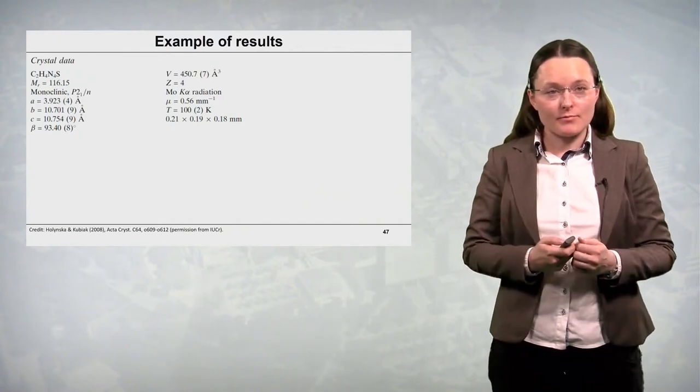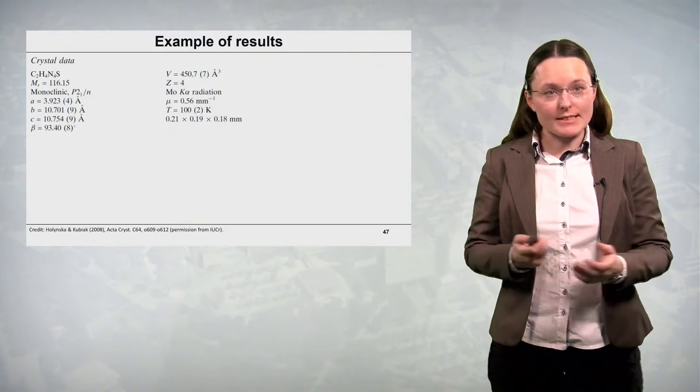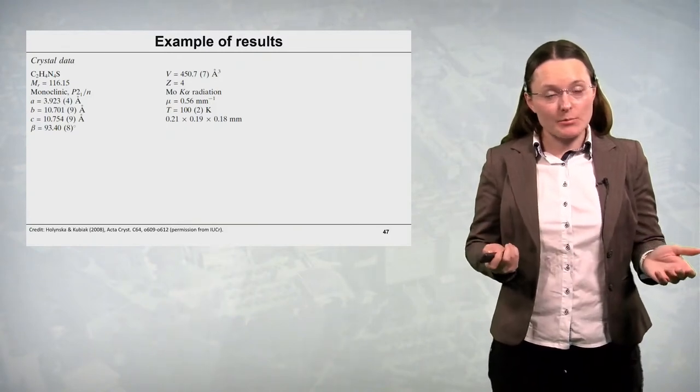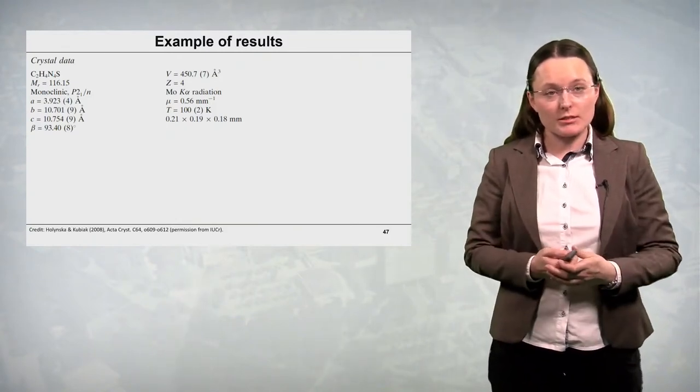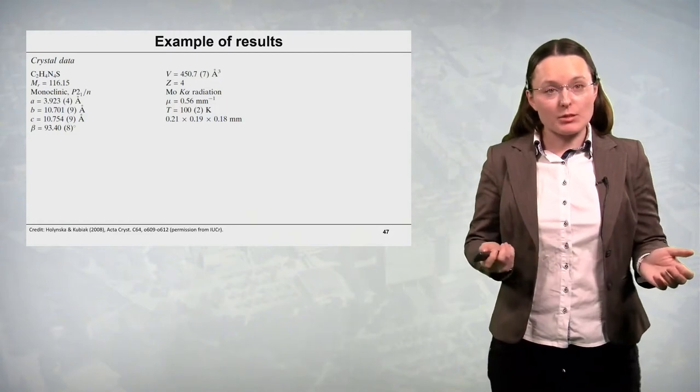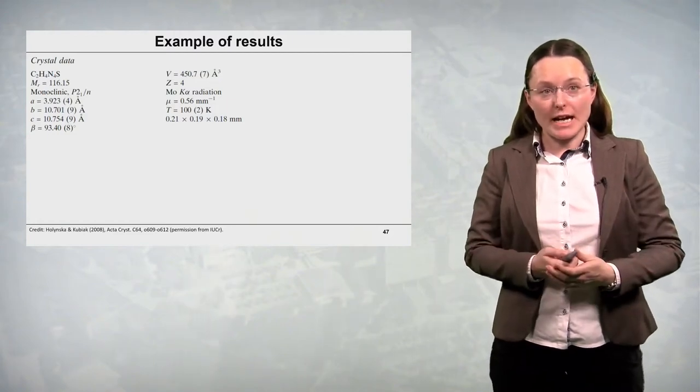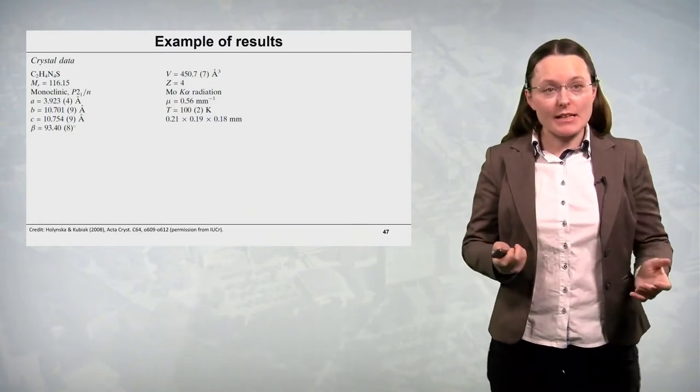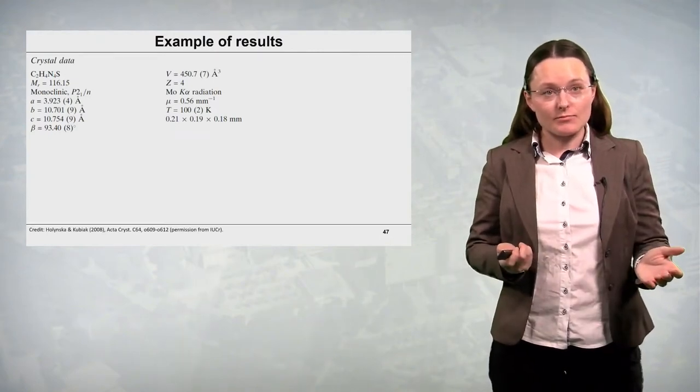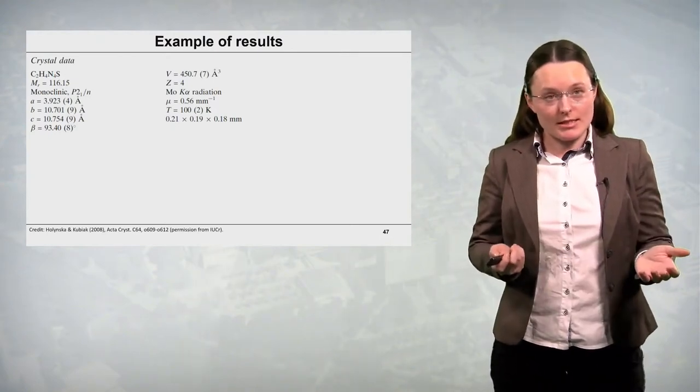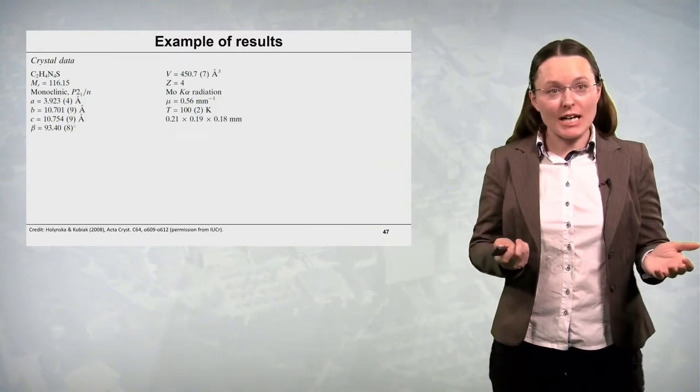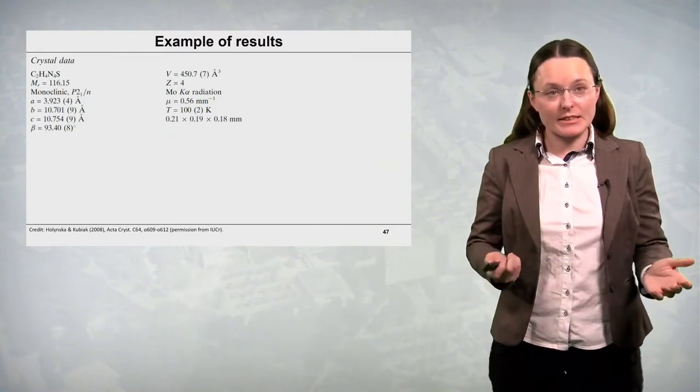So first we have some crystal data. The sum formula, the molecular mass, crystal system in this case monoclinic, space group type, in this case P21/n, then the cell constants abc beta. In monoclinic crystal system, just to remind you alpha and gamma angles are exactly 90 degrees.